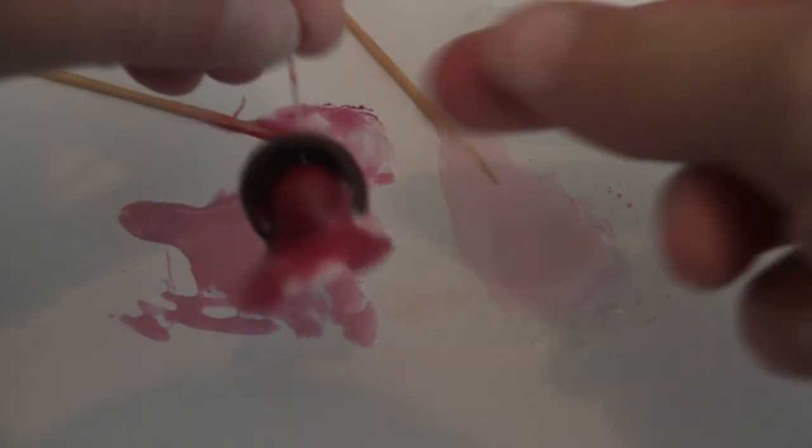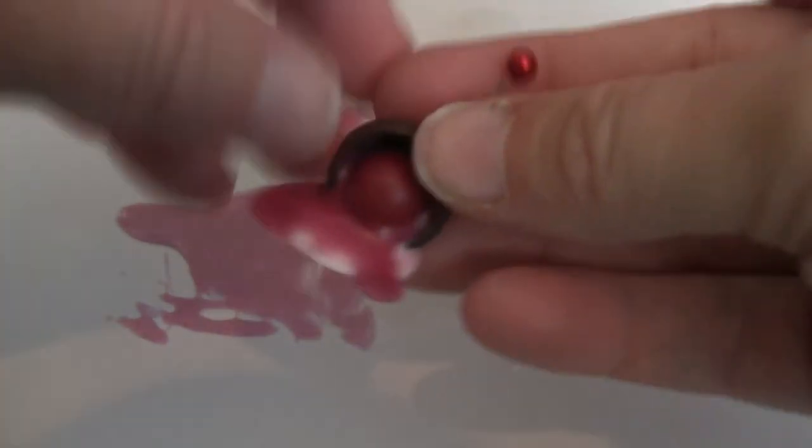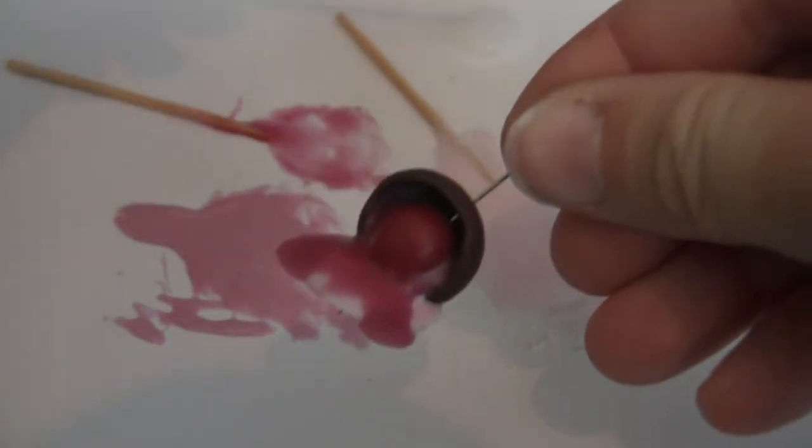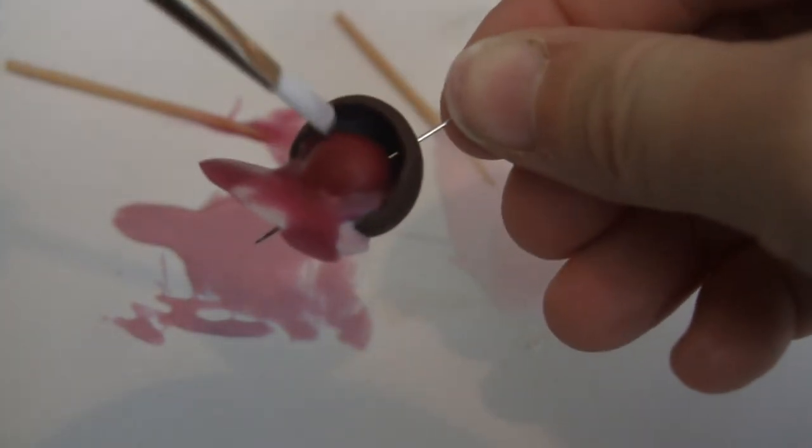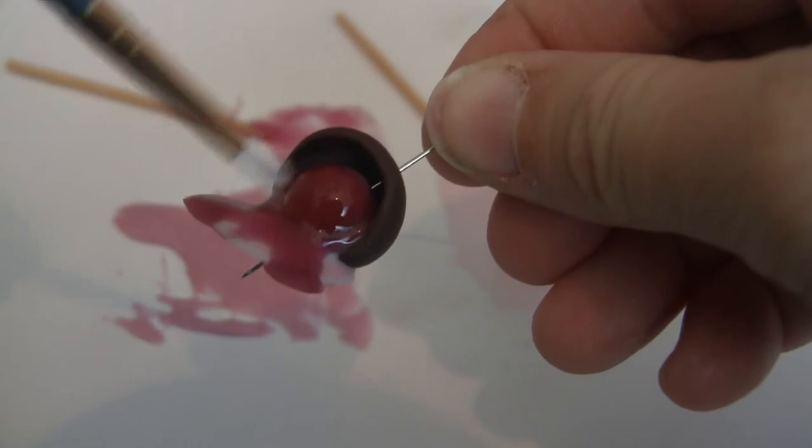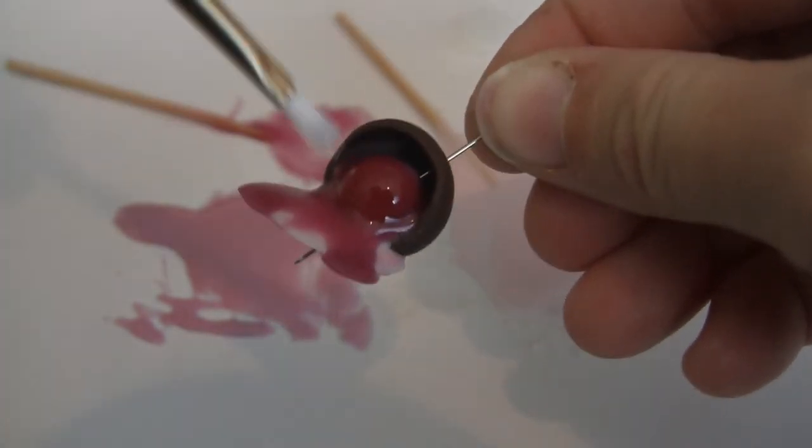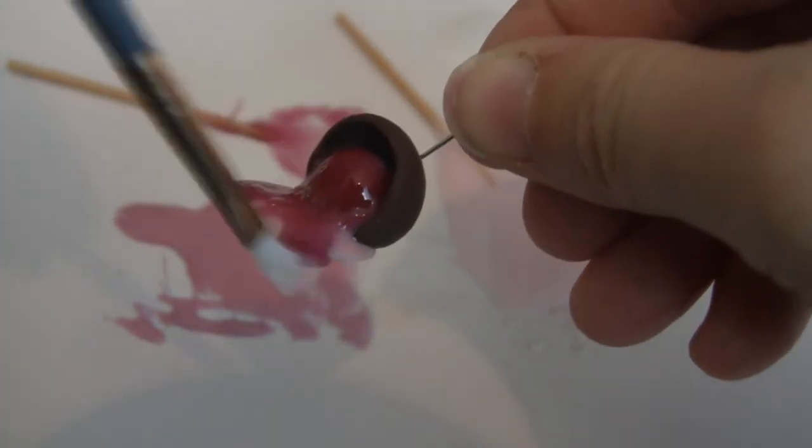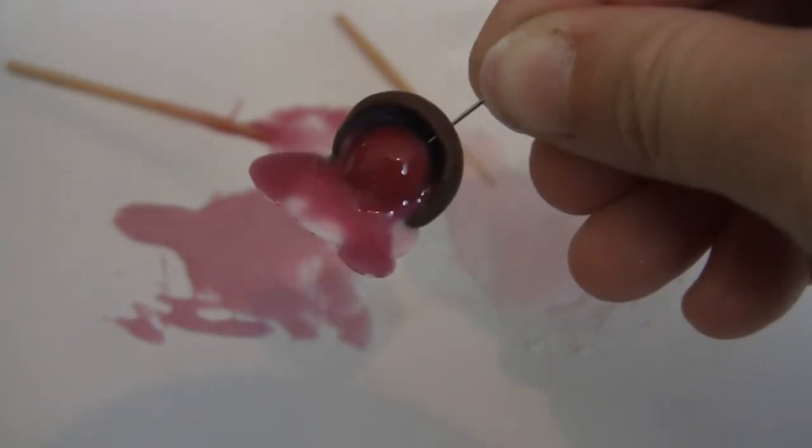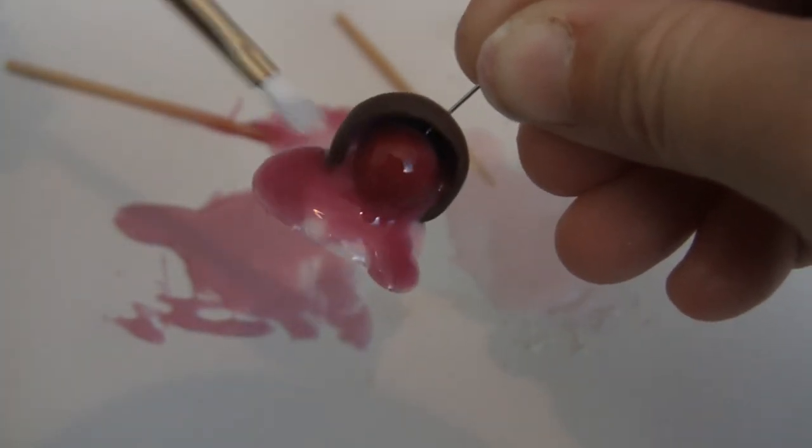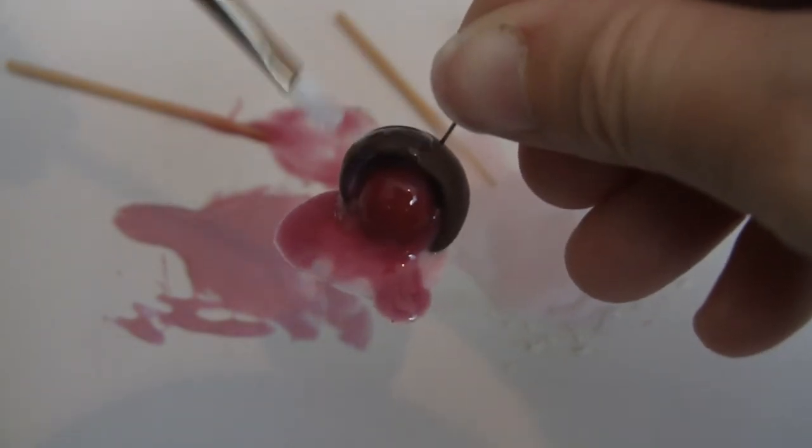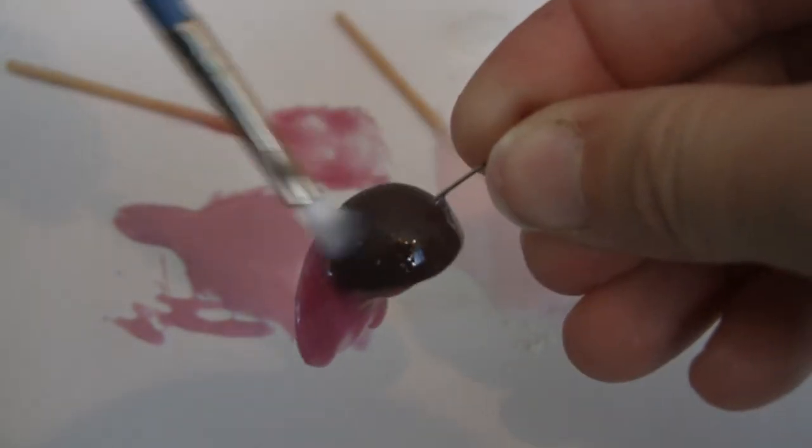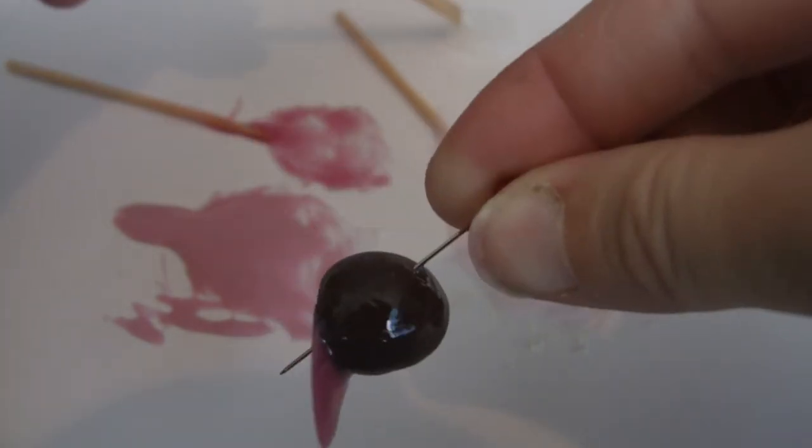Once you're finished, you can poke a pin through, especially if you've used Primo. If you've used Sculpey, you might not be able to. I always use Sculpey colors half Translucent Primo to strengthen it if you're using Sculpey. But Fimo is nice and strong.